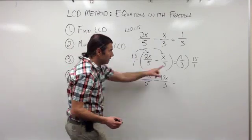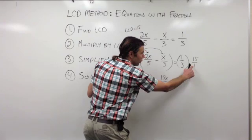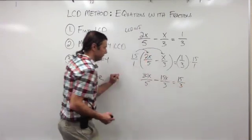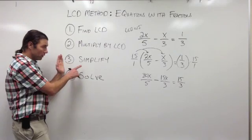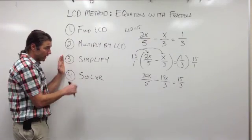On the right side, 1 times 15 is 15, and 1 times 3 is 3. Okay, I'm done multiplying, so now I want to simplify each of those terms, each of those fractions.